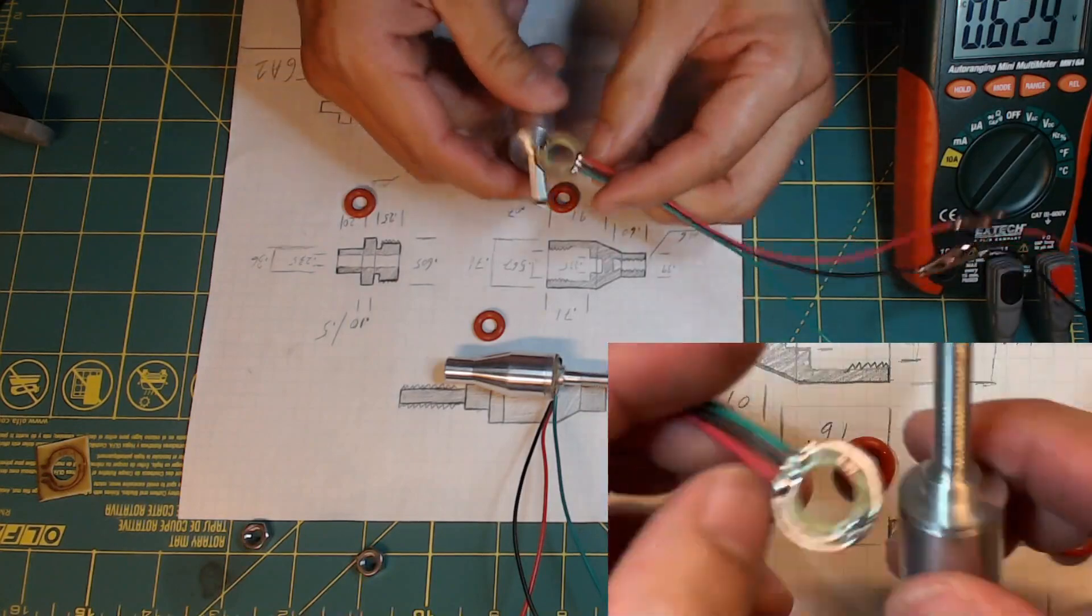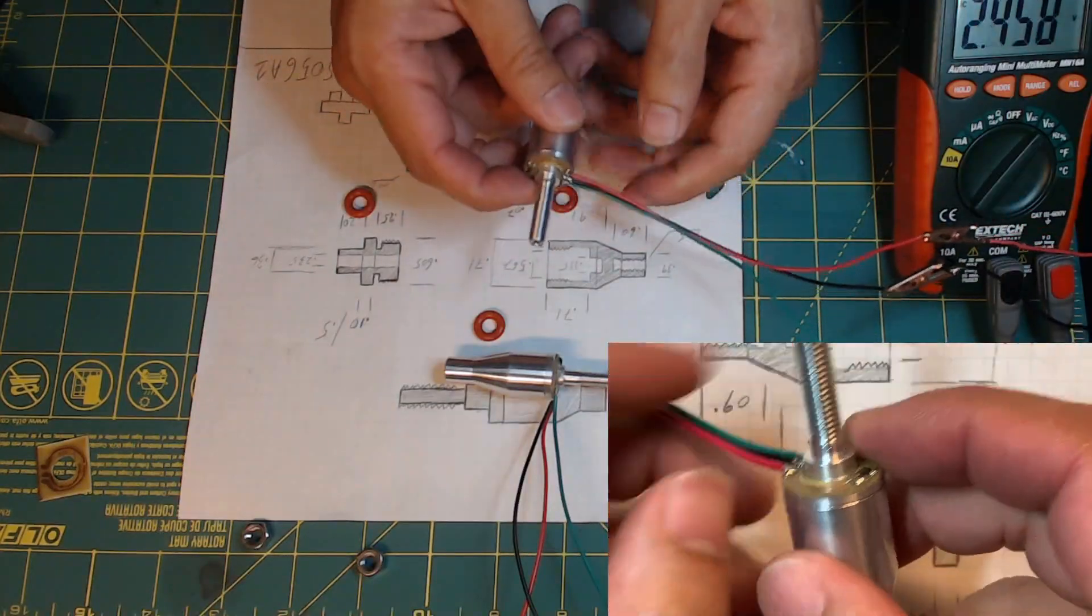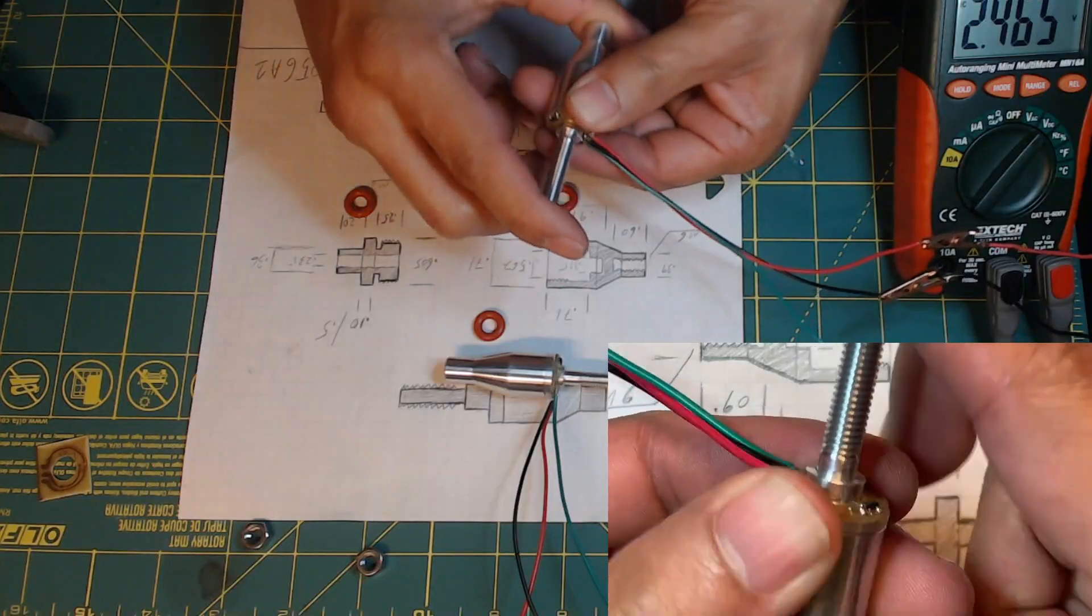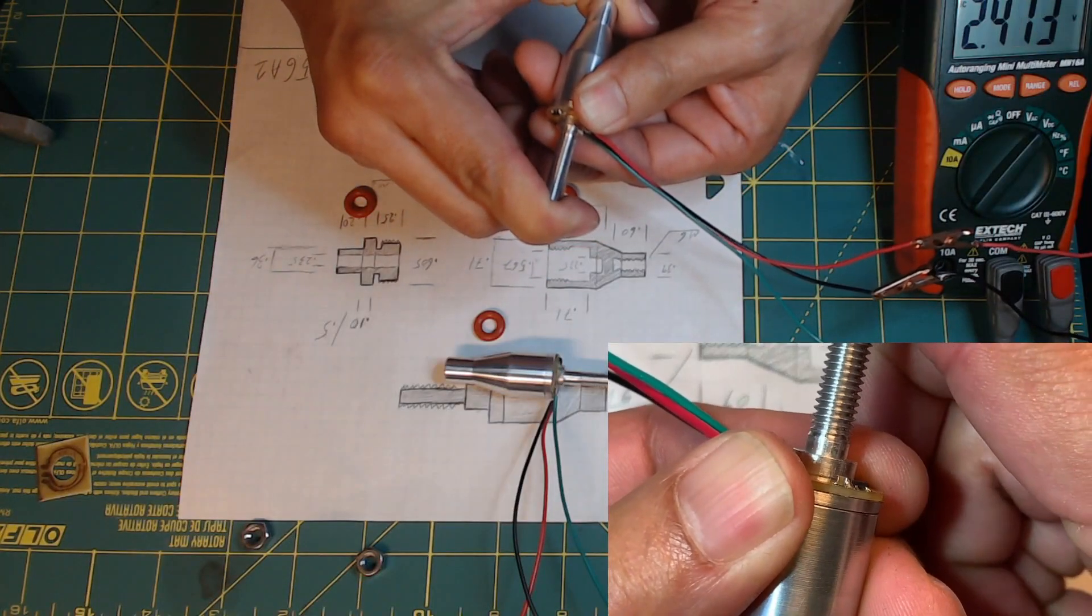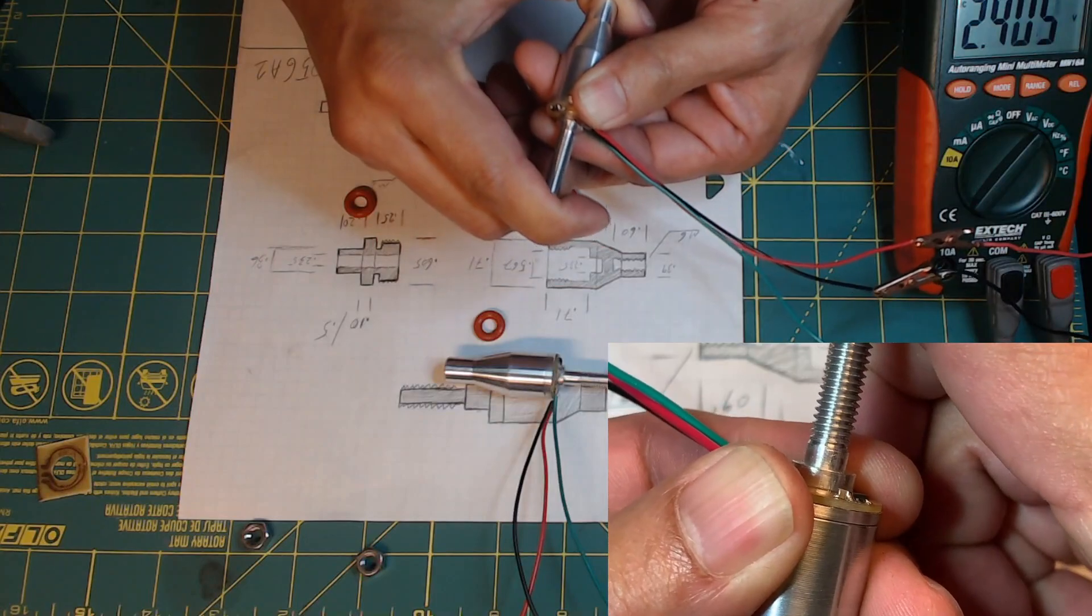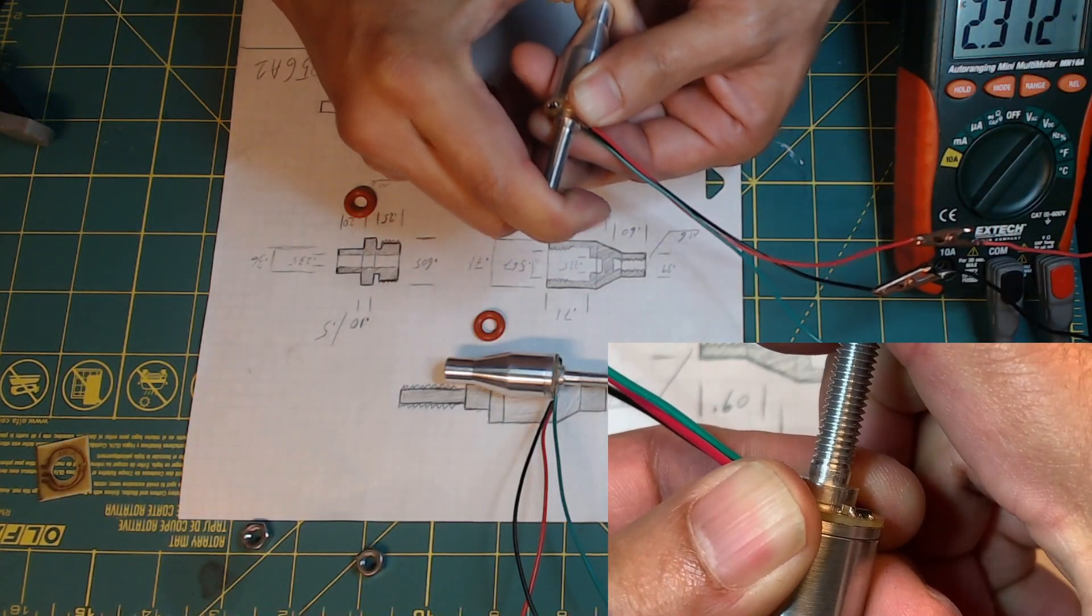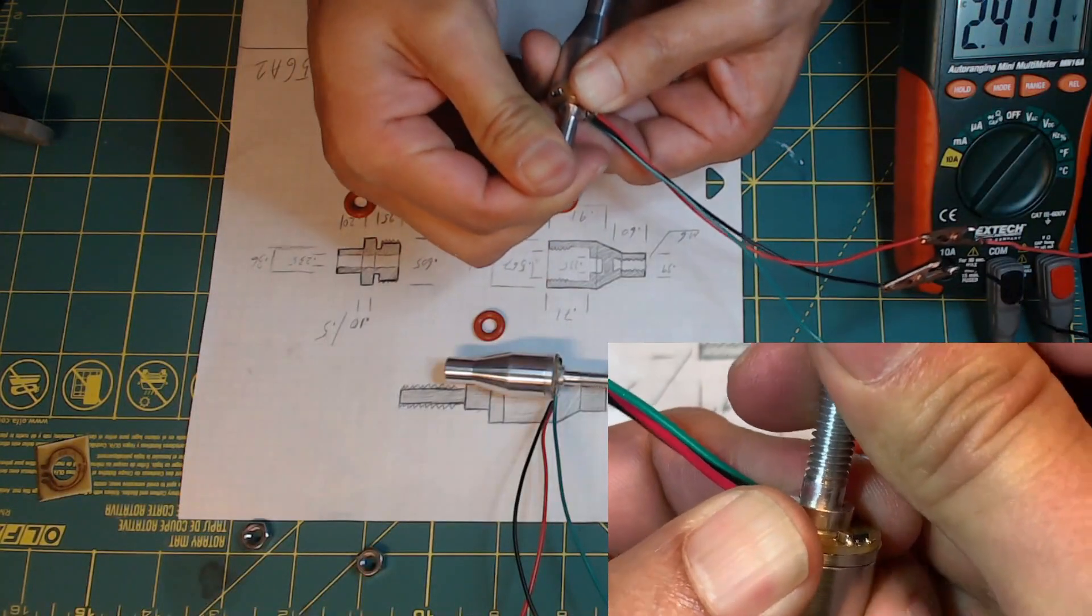So all you're doing is attaching it to the cap. And when you press on it you can see the movement is minor, very little, and the voltage changes. If you pull on it, it's the same thing.